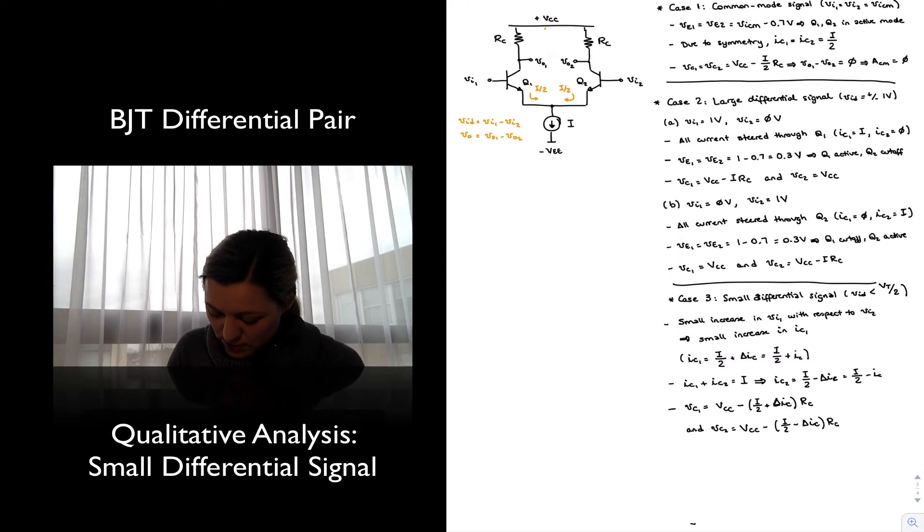And V_C2 equals V_CC minus I/2 minus delta I_C times R_C. And so we can see that the output voltage, which is V_C1 minus V_C2, the terms V_CC minus I/2 times R_C are going to cancel, and so we're going to be left with two delta I_C times R_C.